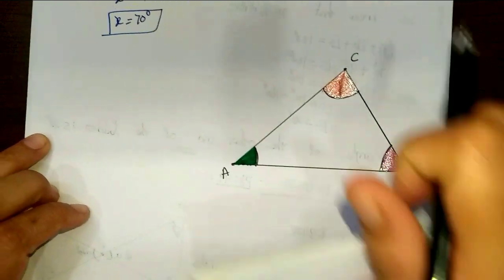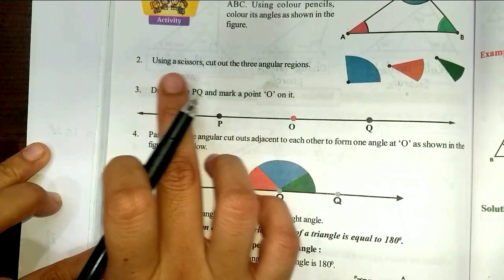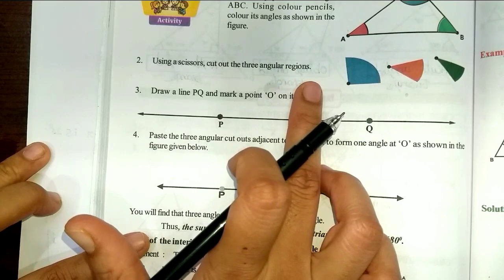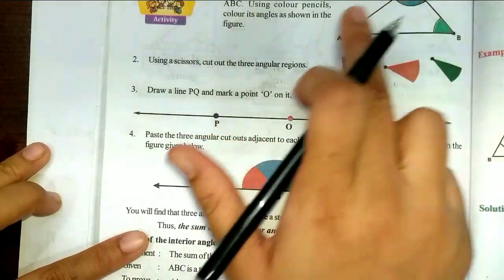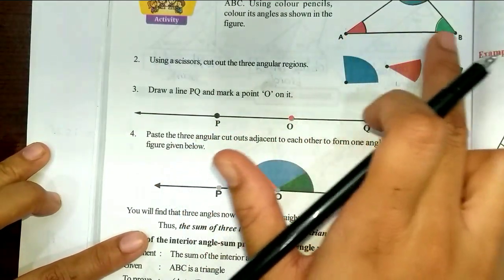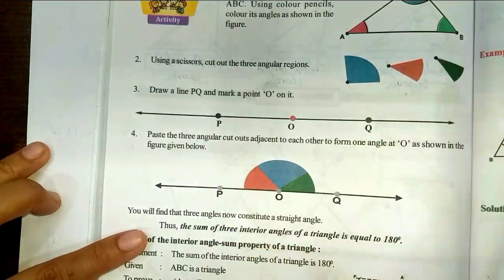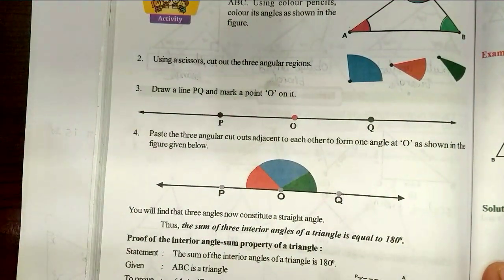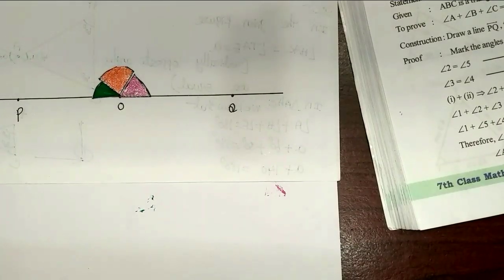Next, second point: using scissors, cut out the three angular regions. These three angles — we will cut the colored parts.